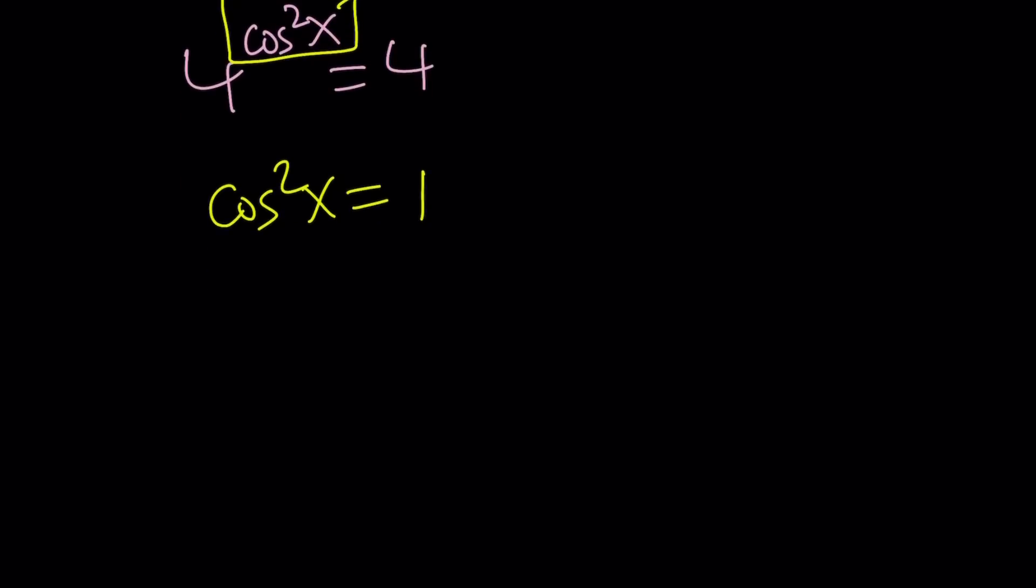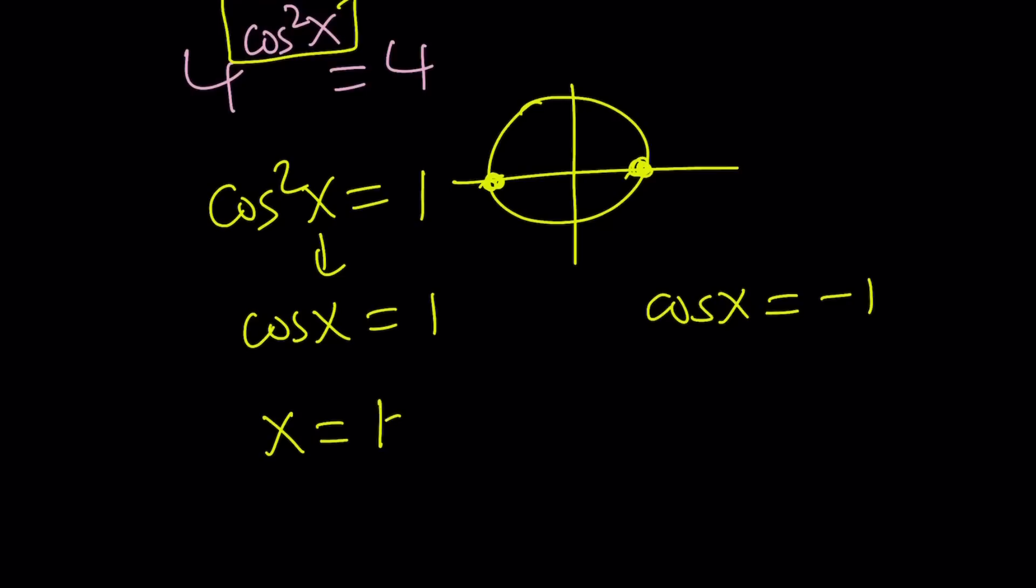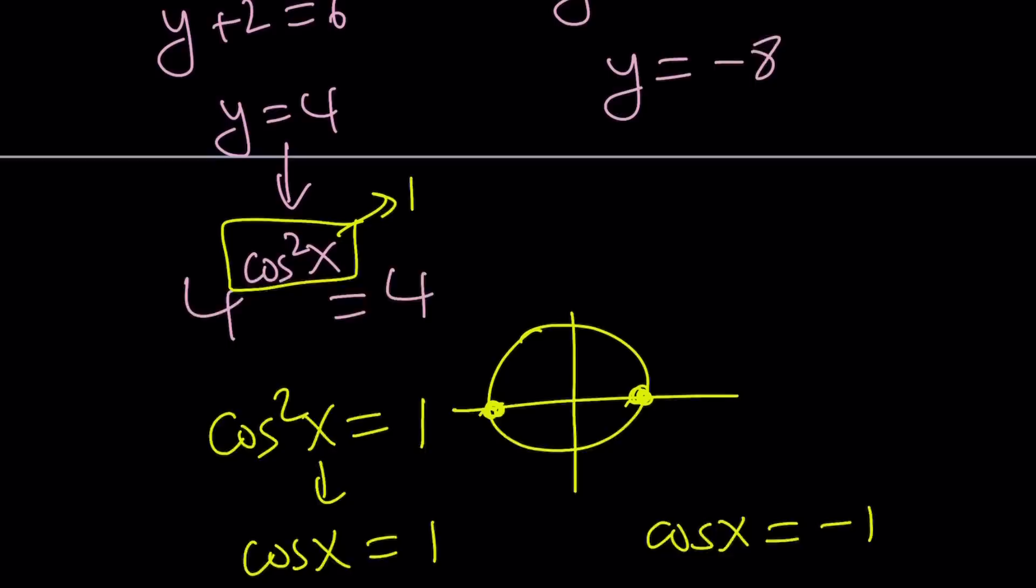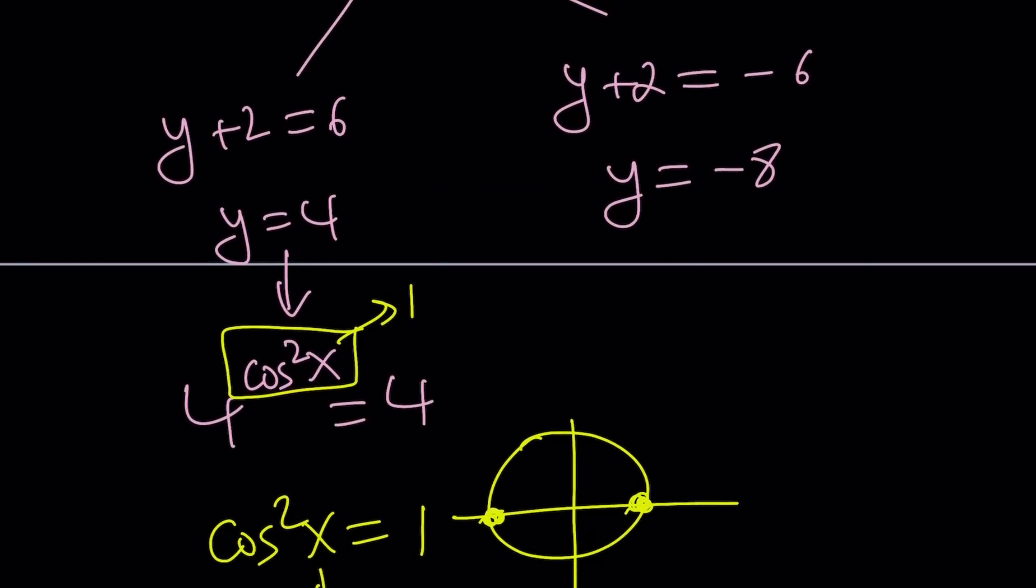So cosine squared x equals 1. And from here, we can come up with two solutions. Cosine x is either 1. Or cosine x is negative 1. If you think about the unit circle, cosine is 1 at 0, 2 pi, so on and so forth. And it's negative 1 at pi. So we're basically looking at all multiples of pi. I mean pi, not phi. So we can basically write x as k pi where k is an integer. Make sense? It should, right?